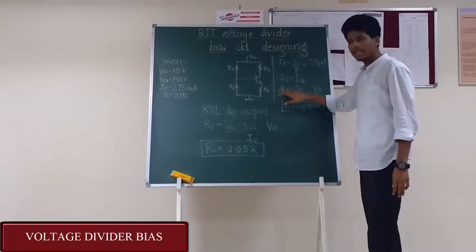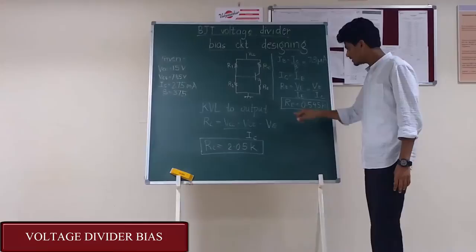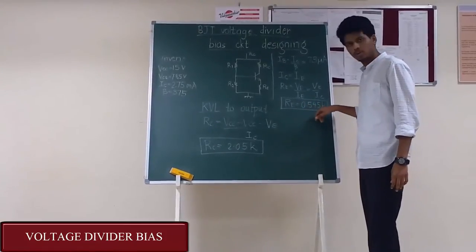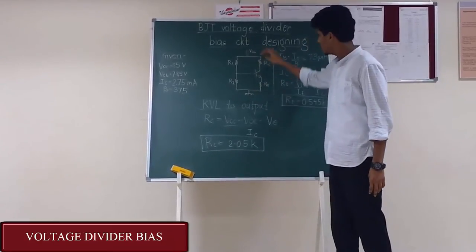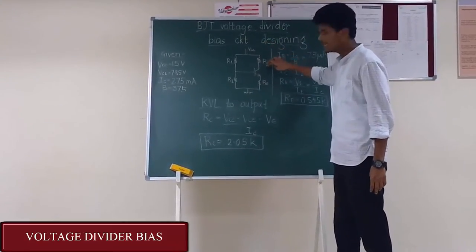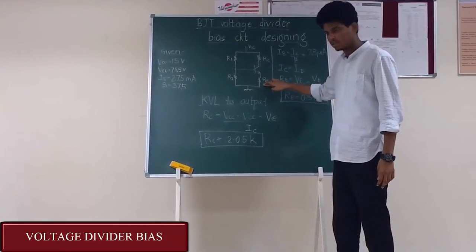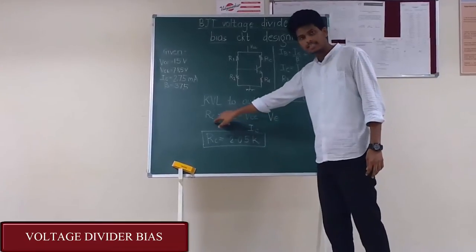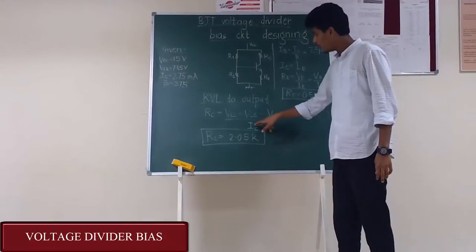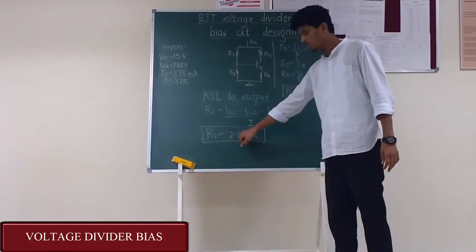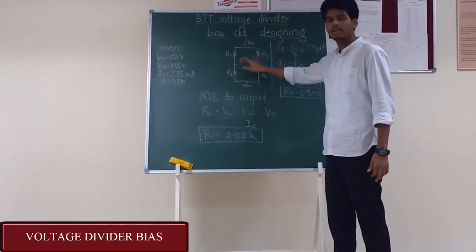Therefore by Ohm's law RE = VE/IE = VE/IC, that is RE = 0.545 kilo ohms. Now applying KVL to the output we get VCC - IC*RC - VCE - IE*RE = 0. That gives us RC = (VCC - VCE - VE)/IC. Thus RC = 2.05 kilo ohms. Now let us calculate the values of R1 and R2.